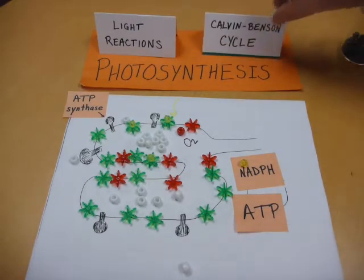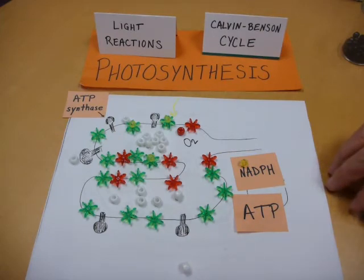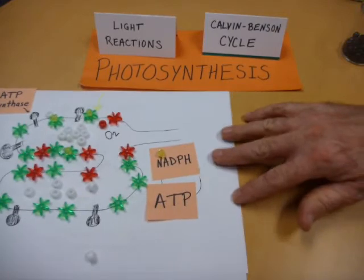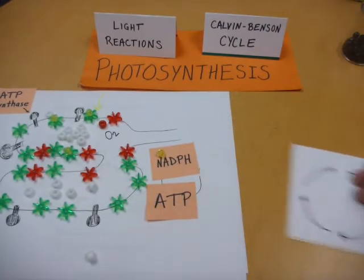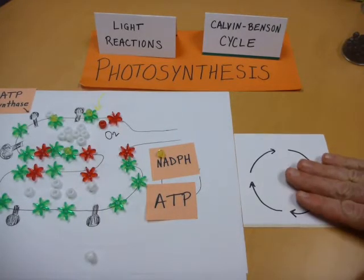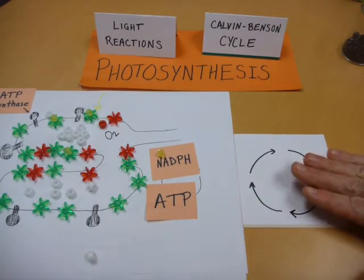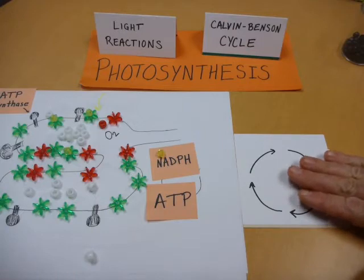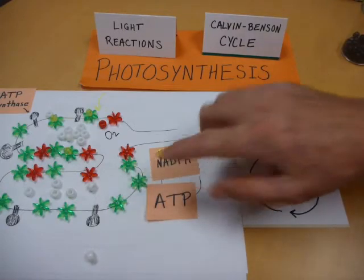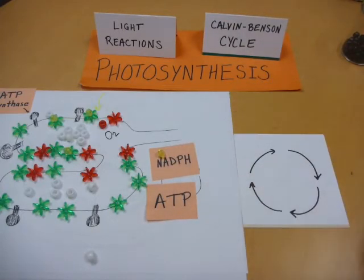Now I want to move on to the Calvin-Benson cycle, sometimes called dark reactions or just the Calvin cycle. Let me move this over, just give us a little template. This still is happening in the chloroplast, just out in the stroma, not in these membranes, but outside of those membranes.